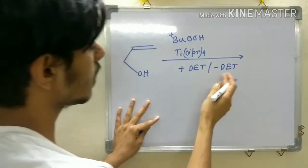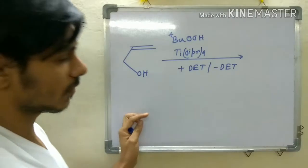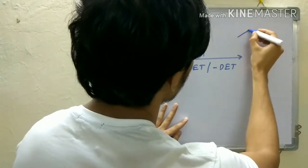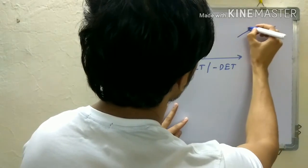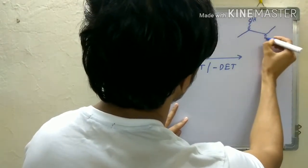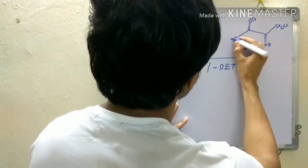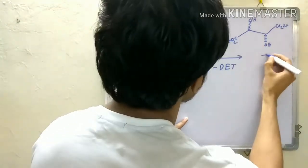What is DET? DET is diethyl tartrate. So, this is your diethyl tartrate: OH, OH, CO2Et, CO2Et. This is plus DET.